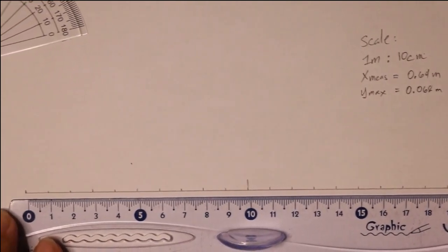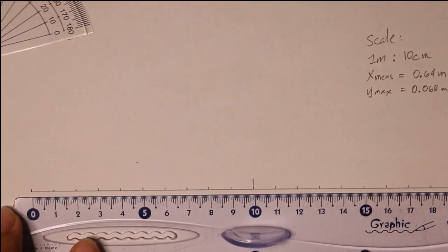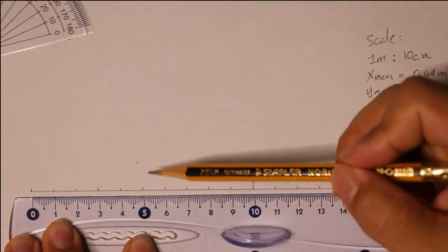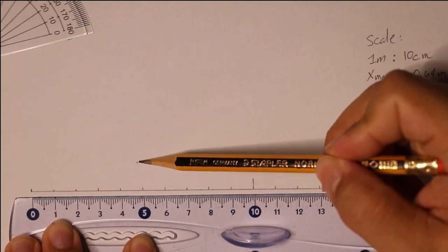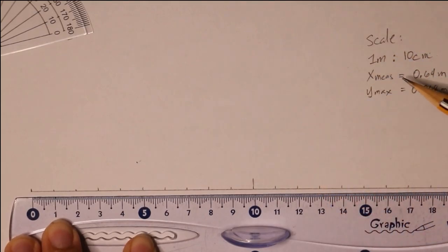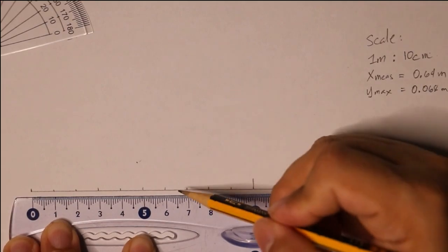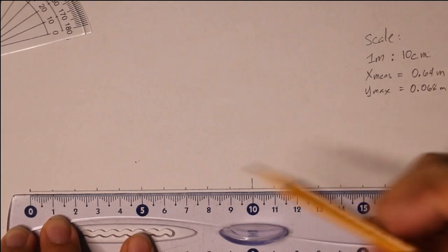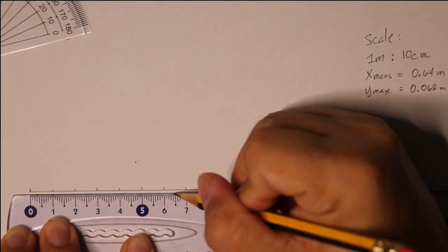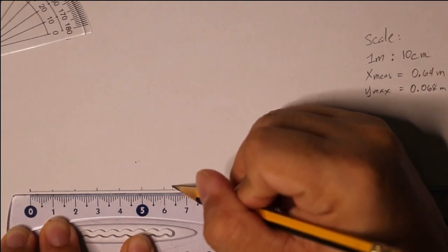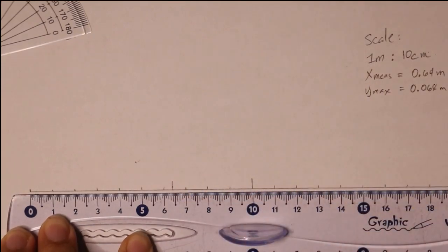The first thing that you must plot is the length or the horizontal measurement, the range. At 15 degrees, the range of the projectile is 6.4 centimeters. So that would be 6.4 centimeters right over here. That's how far the projectile will travel.